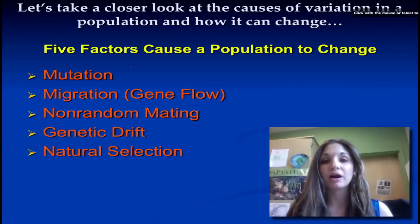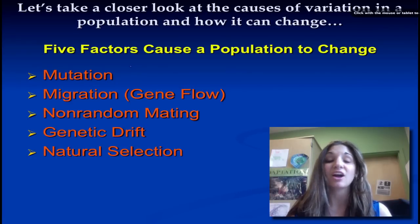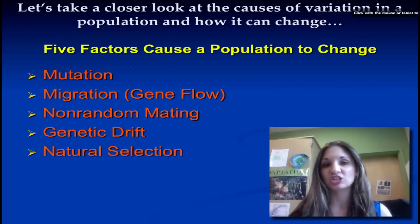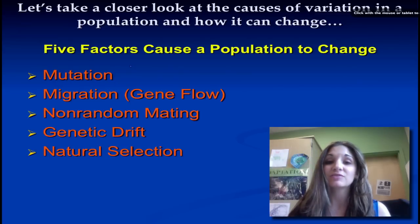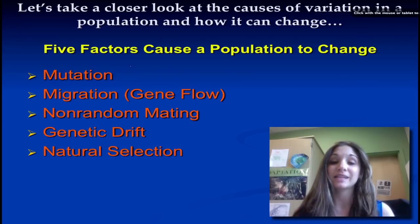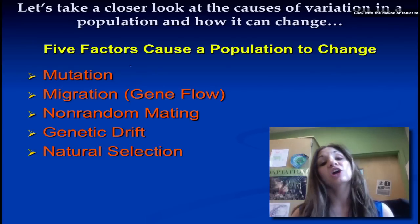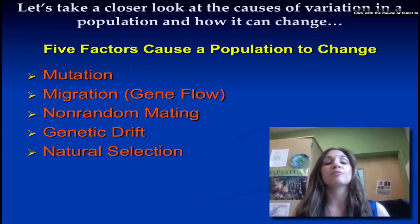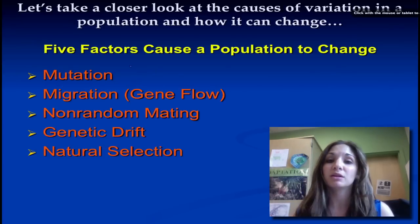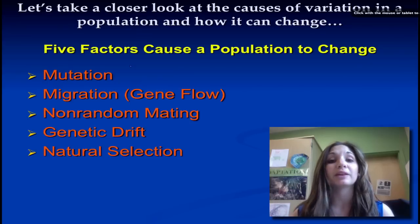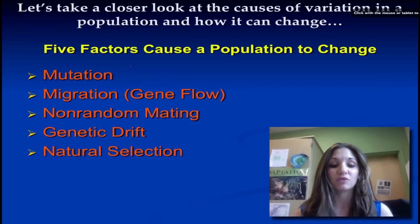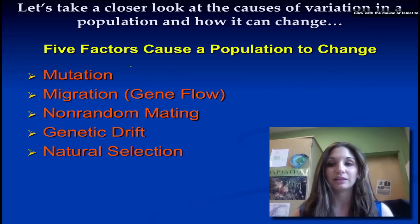Remember that Hardy-Weinberg equilibrium says that the frequency of alleles isn't changing. In order for that to be satisfied, the population has to be static. There are five factors that can cause us to move away from Hardy-Weinberg equilibrium and demonstrate that the population is changing over time through its frequency of alleles.